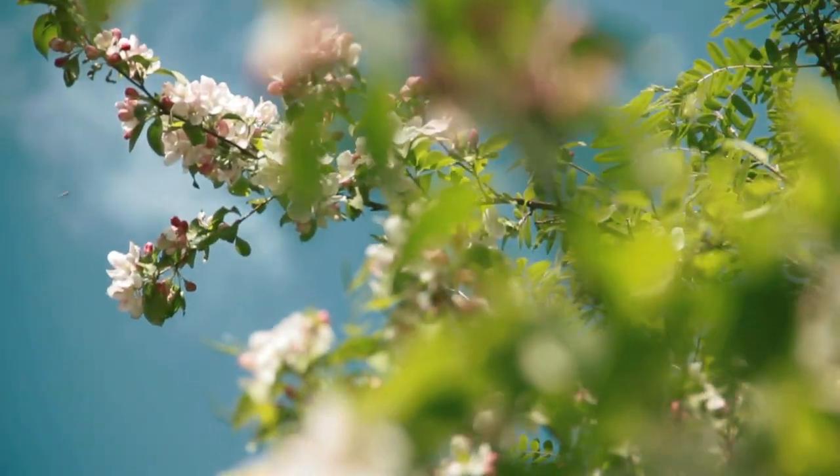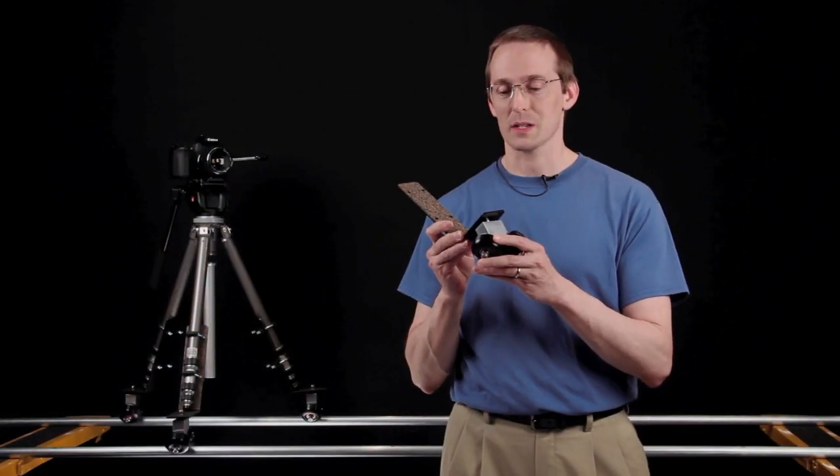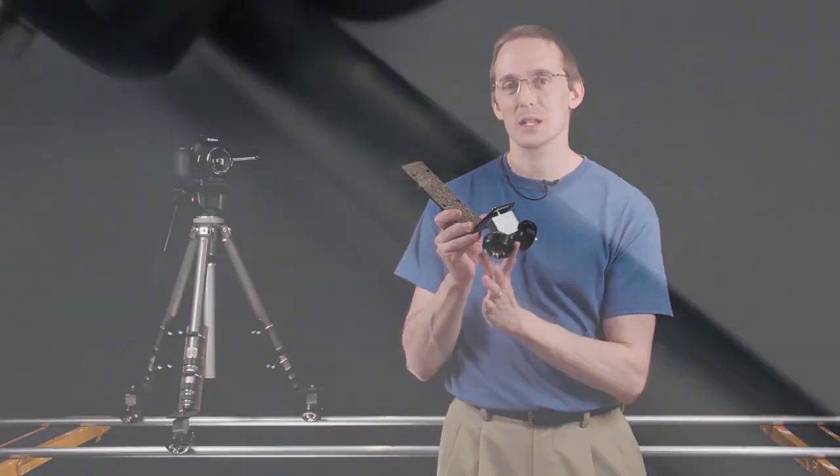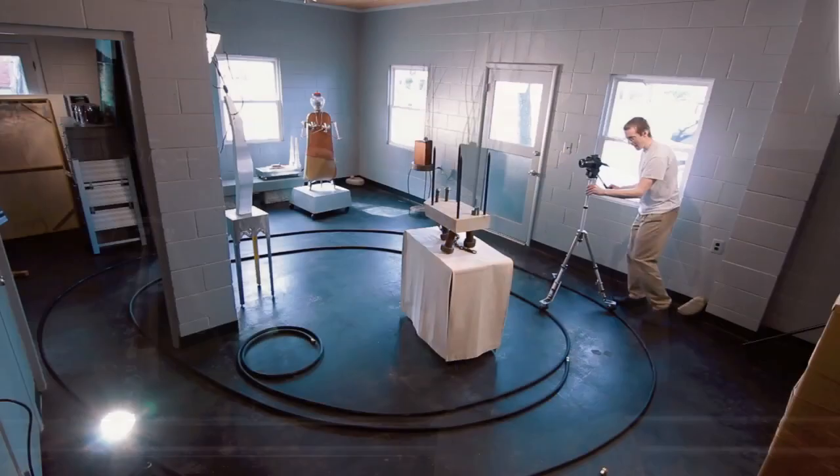And one really unique thing about our system is that we have a dual axis wheel assembly. So it rotates this way as well as this way when it rolls down the track. And the nice thing about that is it allows you to use the Nautilus Tripod Wheels on curved track.